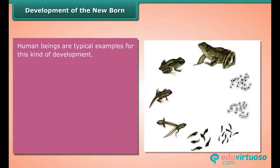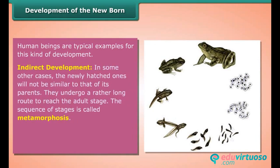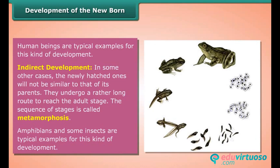In indirect development, the newly hatched ones will not be simply similar to their parents. They undergo a rather long route to reach the adult stage. The sequence of stages is called metamorphosis. Amphibians and some insects are typical examples of this kind of development.